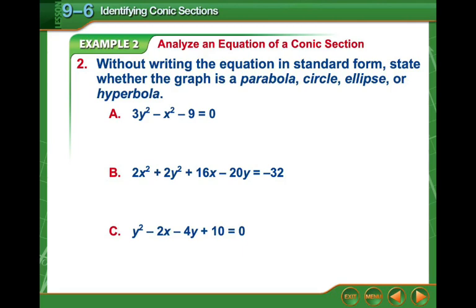So looking at A here, we have our A value, remember that's in front of x squared, so it's negative one. B is in front of xy. We don't have an xy here so it's zero. That's because the zero eliminated xy. And then our C value is in front of y squared, so that's three. So now our discriminant, remember that's b squared minus 4ac.